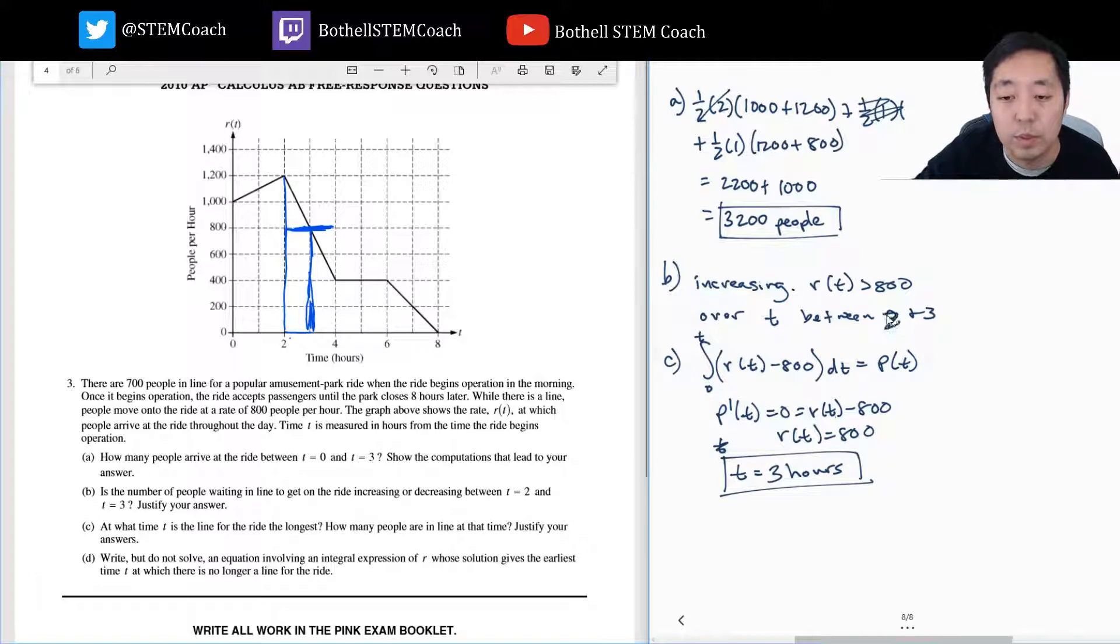This is between two and three, by the way. At what time is the ride the longest? How many people are on the line? Let's see. At three, we found that 3,200 people had shown up. Over three hours, it was operating for 800. So 2,400 people. So 3,200 people arrived. How many people were, over the three hours, three times 800, got onto the ride. This is 2,400. 3,200 minus 2,400 is 800 people.